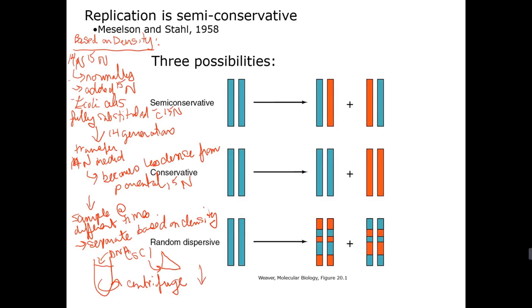So centrifugation. And the DNA will migrate into the gradient and it will stop at a position of the gradient where the cesium chloride density is equal to the DNA density. So the DNA migrates and stops where the cesium chloride density is equal to the DNA density.